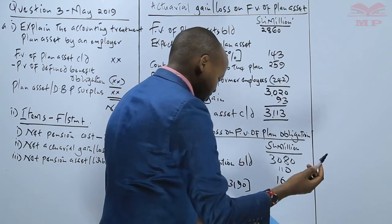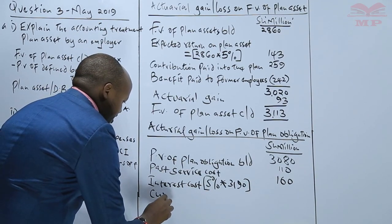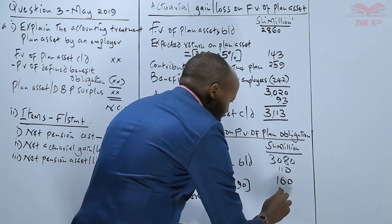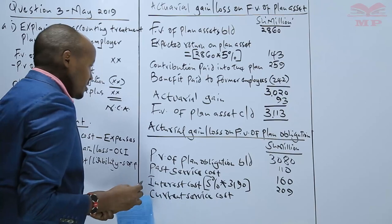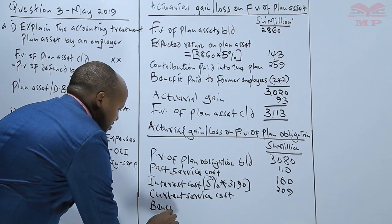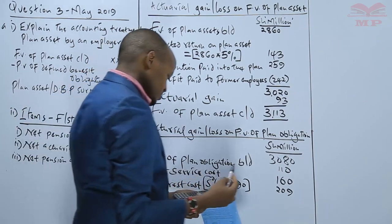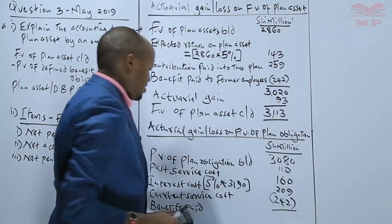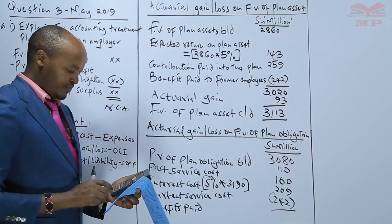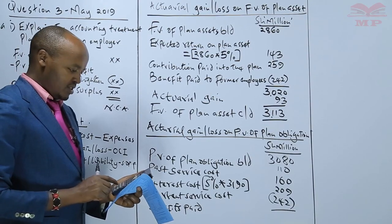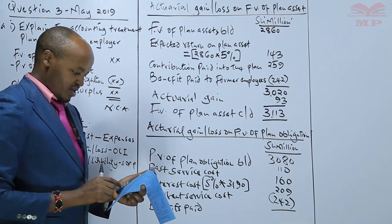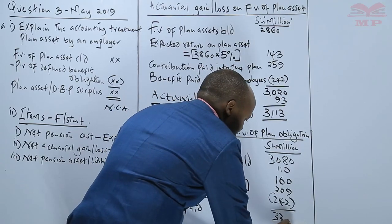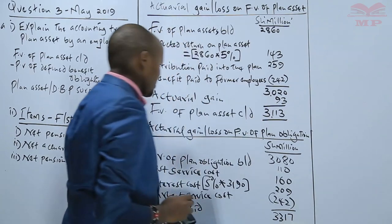We then add the current service cost, which is given as 209 million. We then deduct the benefits paid, which are the same 242 million as used above. So the expected present value of the plan obligation at end of year is: 3,080 + 110 + 160 + 209 − 242 = 3,317 million.